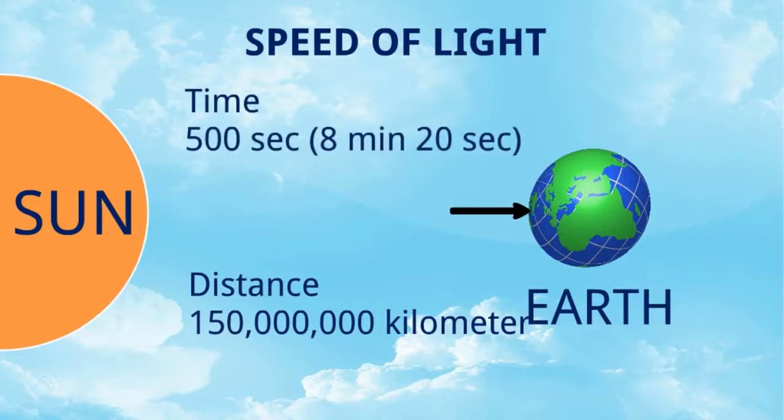Do you know how much time light takes to travel this path? It is only 500 seconds. That means 8 minutes 20 seconds. So light is the fastest thing in the universe. We can say its speed is 300,000 kilometers per second.